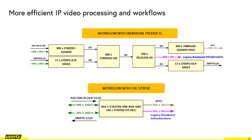In the diagram highlighted here, what we're showcasing is a customer that required a number of services: 300 channels of decoding, de-encapsulating, routing, frame syncing, up-down cross converting, encoding, and finally encapsulating. As you can see, this requires many units with many different components, dedicated for decode and dedicated for de-encapsulation.